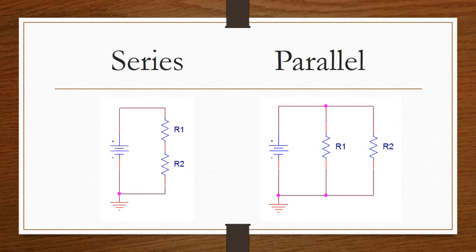Let's compare the series and parallel circuit diagrams. On the left, we have a series circuit. Two resistors are connected like a train. In the parallel circuit, on the right, R1 and R2 are connected like a ladder.